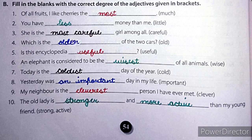Number 8: yesterday was an important day in my life — positive degree. Only important is used, no comparison. Number 9: my neighbor is the cleverest person I have ever met — superlative degree of clever, cleverest is used.